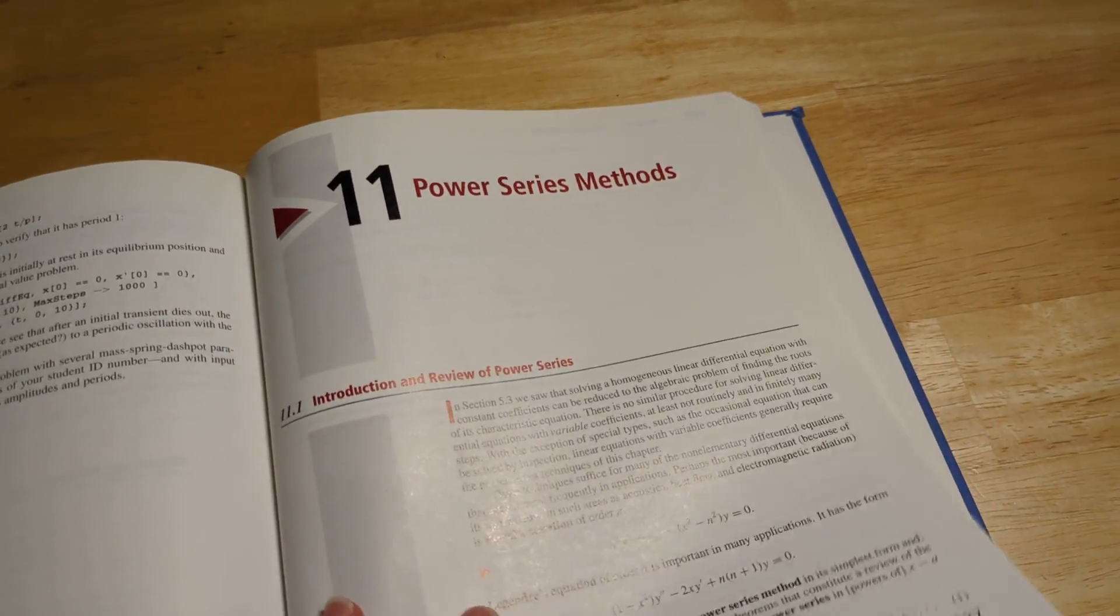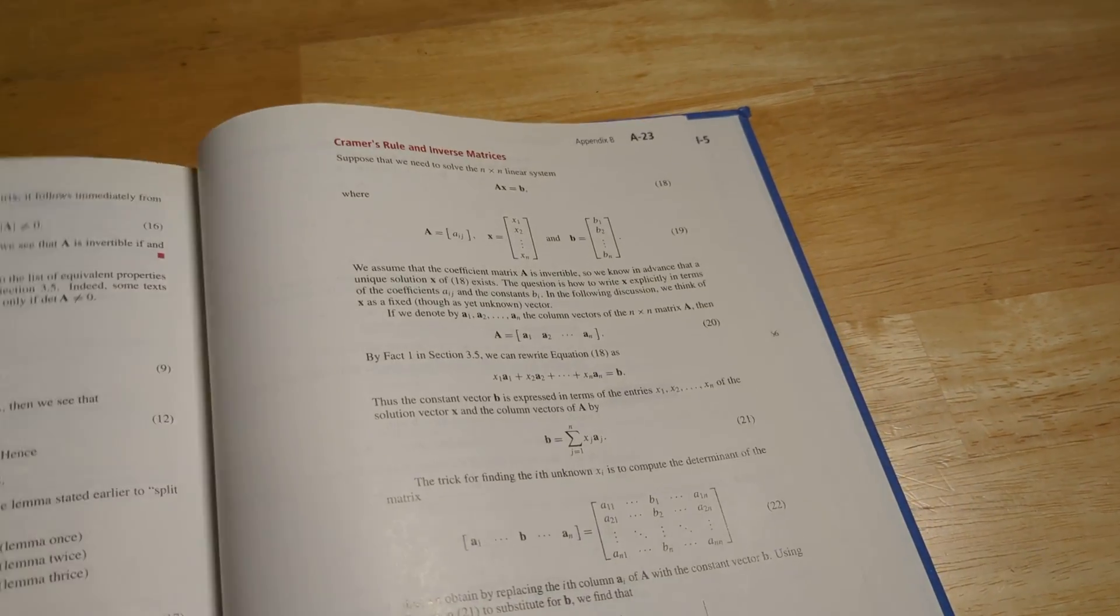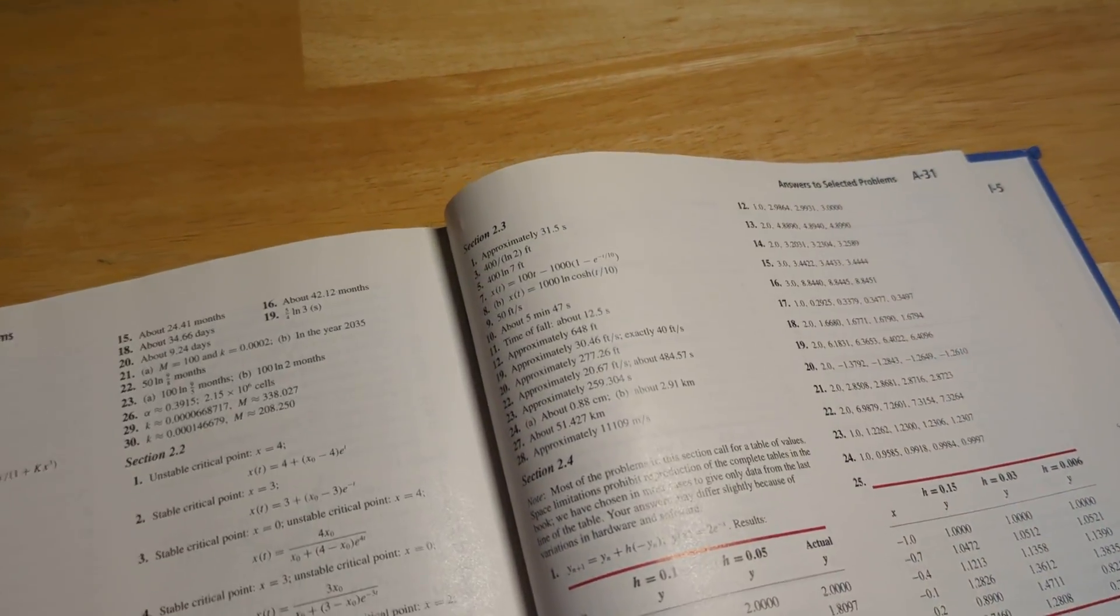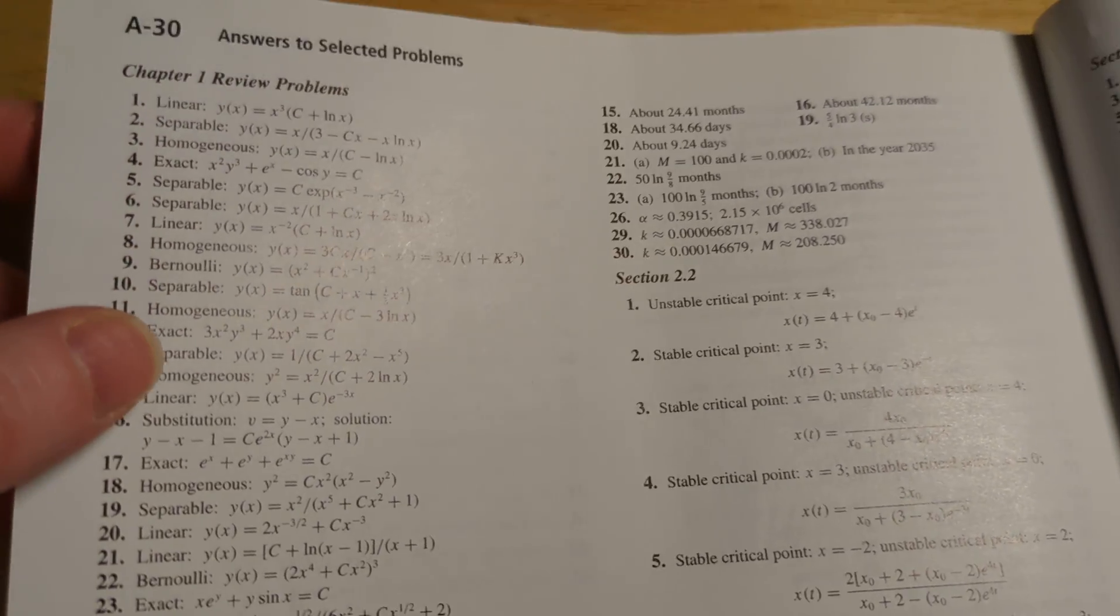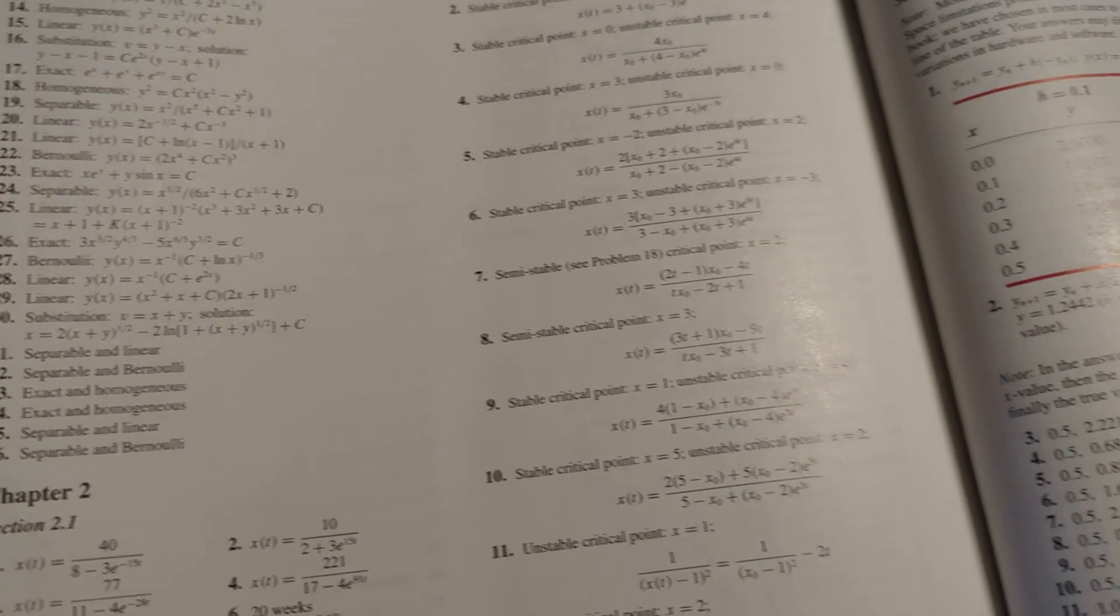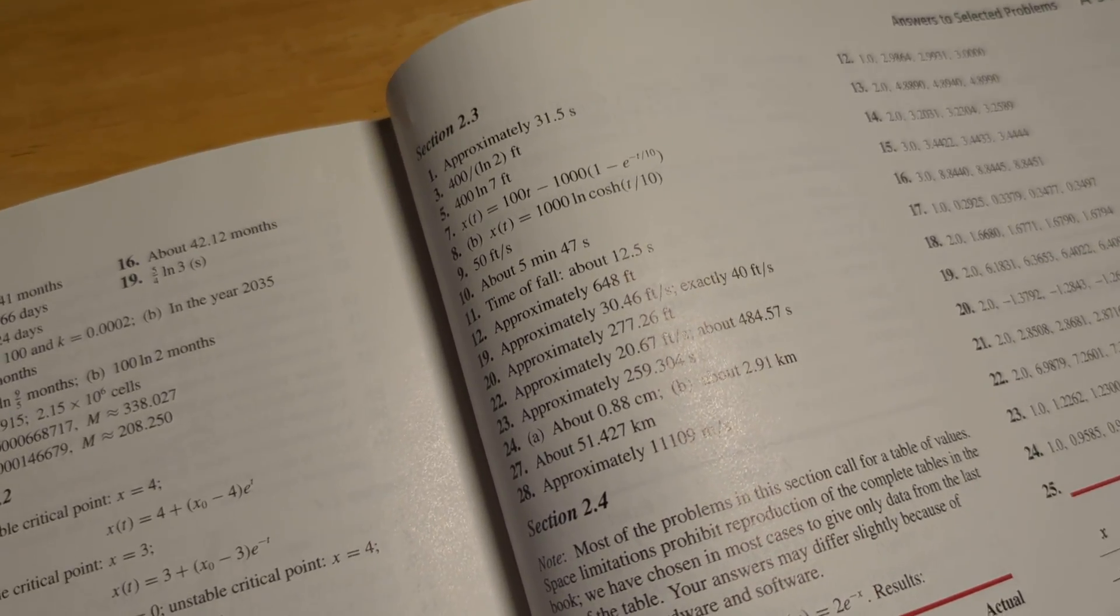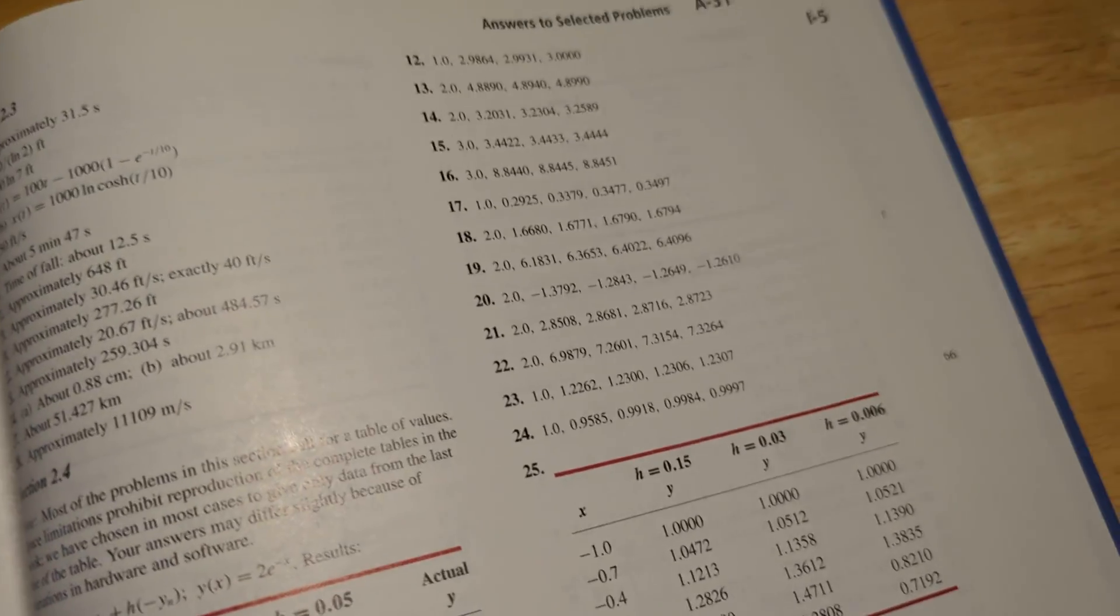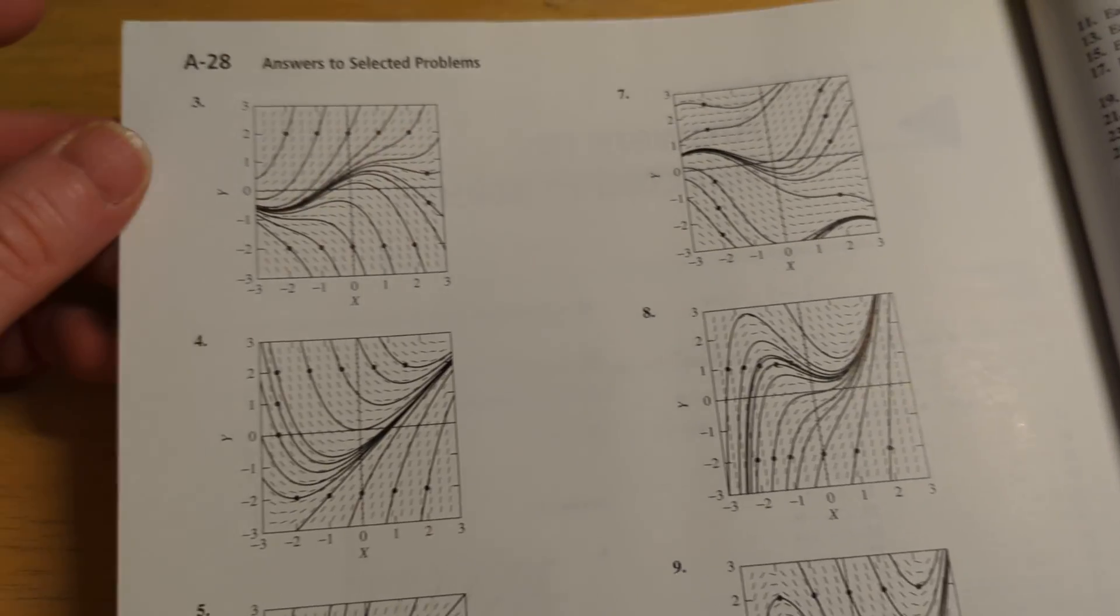As far as the answers in the back of the book, you do have some answers. Let's take a look at those now. So these are answers to review problems. Looks like you get all of those. And then here you see some of the answers in the back of the book. Now, you don't get all of the answers, but you do get a lot of answers. It says selected problems.